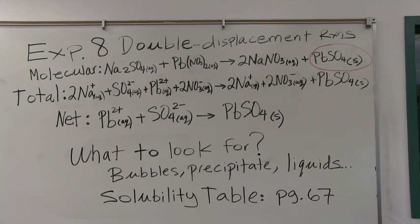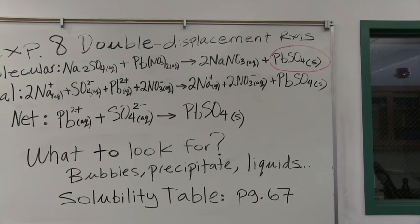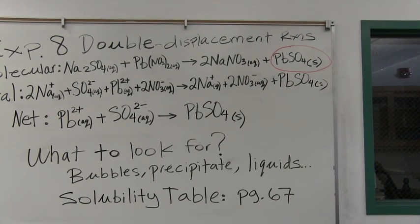take a look at the total ionic that I've written here on the board, and focus on the right hand side, and you'll see that the lead 2 sulfate, because it forms an insoluble product, you're not going to find ions of lead 2 or sulfate in solution once the reaction is complete.